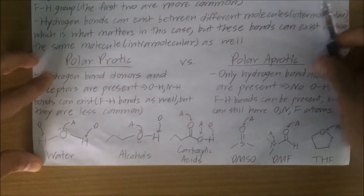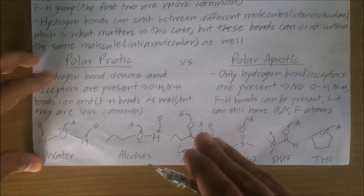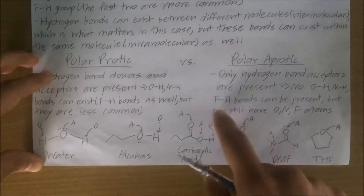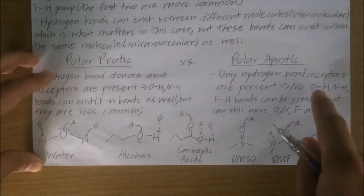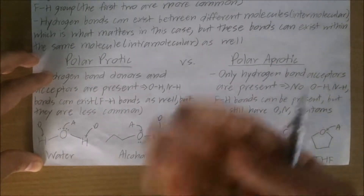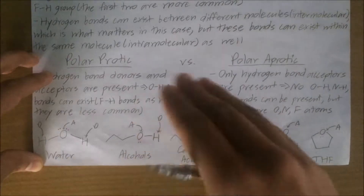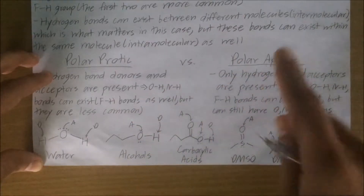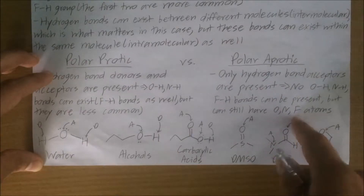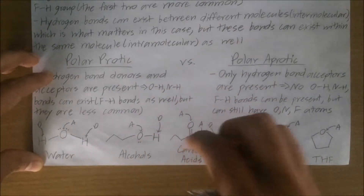In polar aprotic solvents, only hydrogen bond acceptors are present — there can be no hydrogen bond donors, which implies that there cannot be OH, NH, or FH bonds present, because the H atom in OH, NH, and FH is a hydrogen bond donor. We can still have O, N, and F atoms present, but they just have to have covalent bonds with atoms that are not hydrogen.